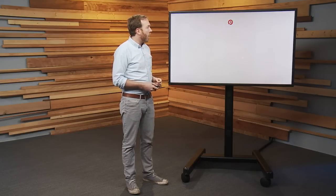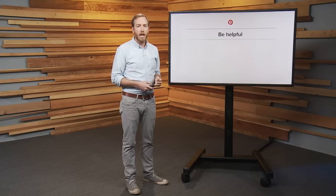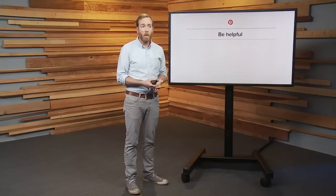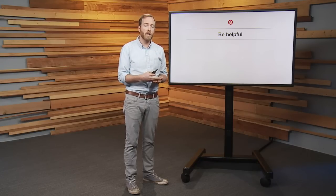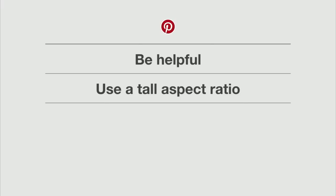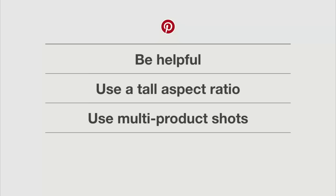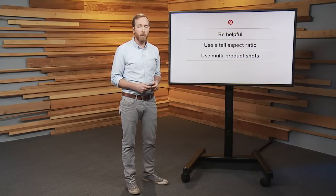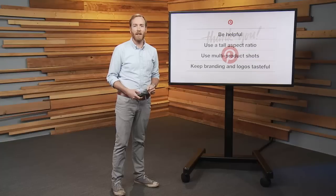So just to close it out, I want to recap the four things we've talked about. The first way you can drive more clicks to your business from Pinterest is by being sure that your pins are very helpful. We talked about three ways to do that. You can make sure your pins are helpful through providing a really detailed description, using text overlays, and including a soft call to action on the pin. The next way is by using a tall aspect ratio. Again, we recommend a 2 to 3 or 1 to 3.5. The third is using multi-product shots to communicate to people that there's a lot more variety behind that particular pin and they should click through to explore the full selection. And finally, keep your branding and logos tasteful and they can help to build your brand on Pinterest as well as drive more traffic to your website. All right, thanks for watching.